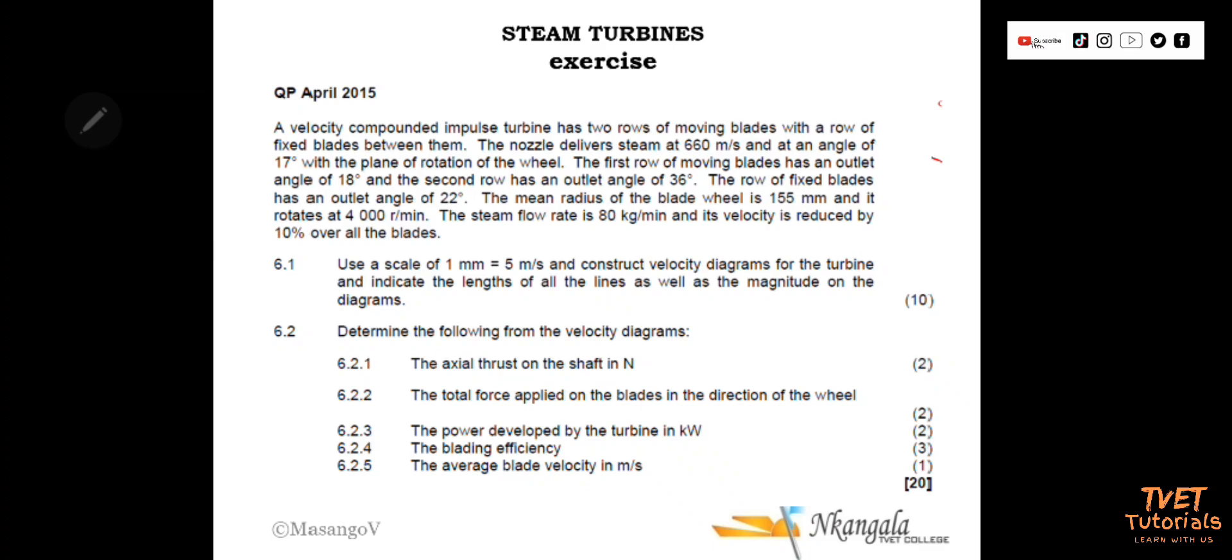The statement reads as follows. A velocity compounded impulse turbine has two rows of moving blades with a row of fixed blades between them. That is the standard introduction informing us that we have a multistage impulse turbine. The nozzle delivers steam at 660 meters per second and an angle of 17 degrees with the plane of rotation of the wheel. So 660 is the velocity leaving the nozzle, or the velocity of the steam entering the turbine. I use notation V1 for that. The angle 17 degrees is the angle of that steam, or sometimes called the angle of the nozzle.